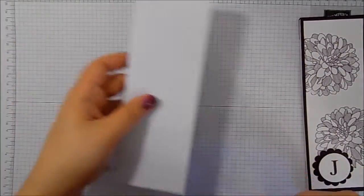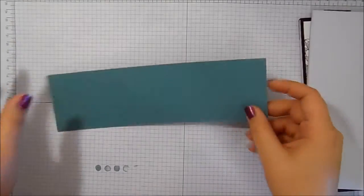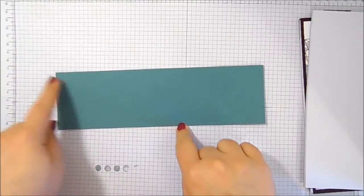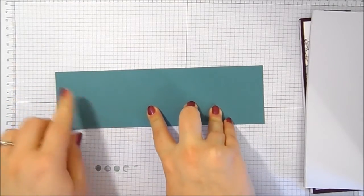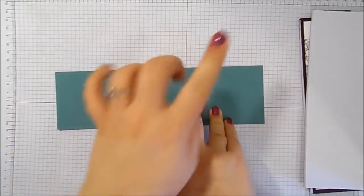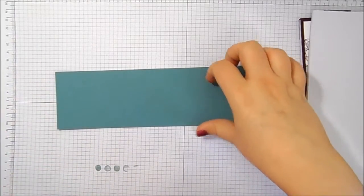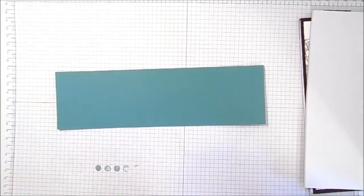So this particular notebook is going to be in Lost Lagoon. And this piece of cardstock measures two and three sixteenths of an inch by nine and a half. And I haven't got the metric measurements to hand but they will be on my blog. The link is in the down bar below.